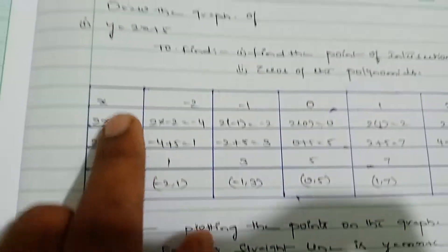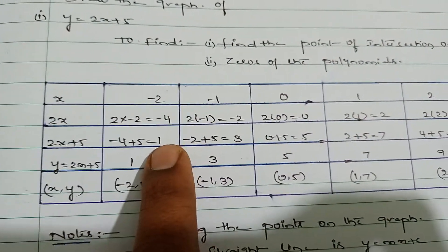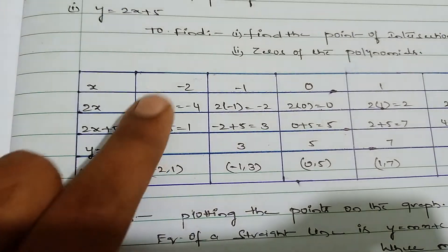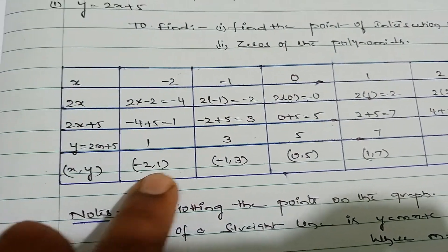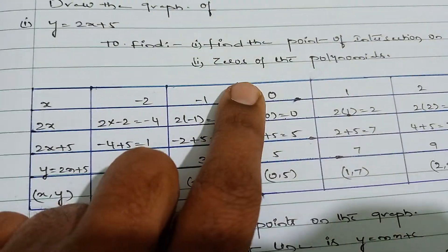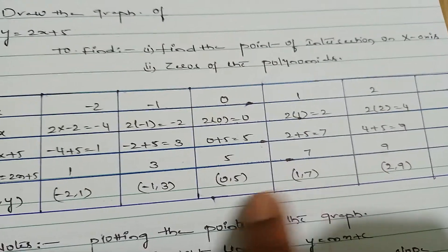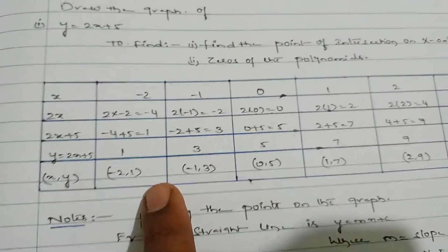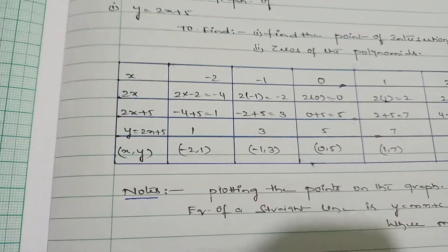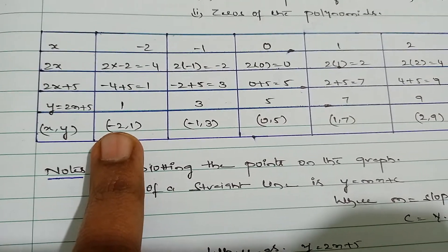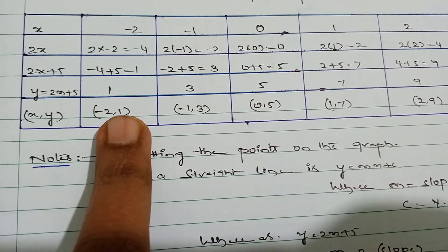Since 2x + 5 equals y, the y values are 1, 3, 5, 7, 9. Write these as coordinate pairs: (−2, 1), (−1, 3), (0, 5), (1, 7), (2, 9). The first value is the x-coordinate and the second is the y-coordinate. These are the points to plot on the graph paper.